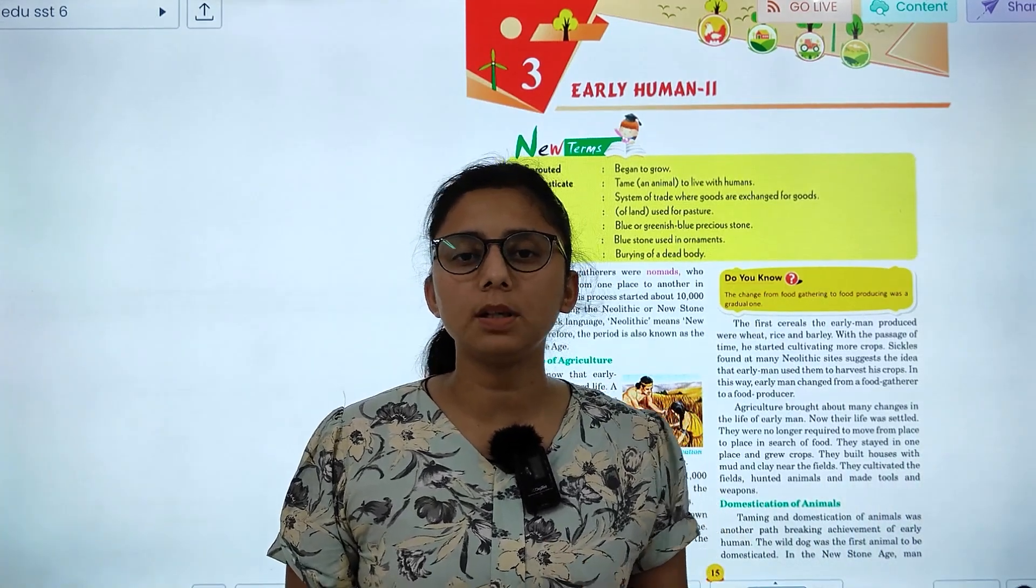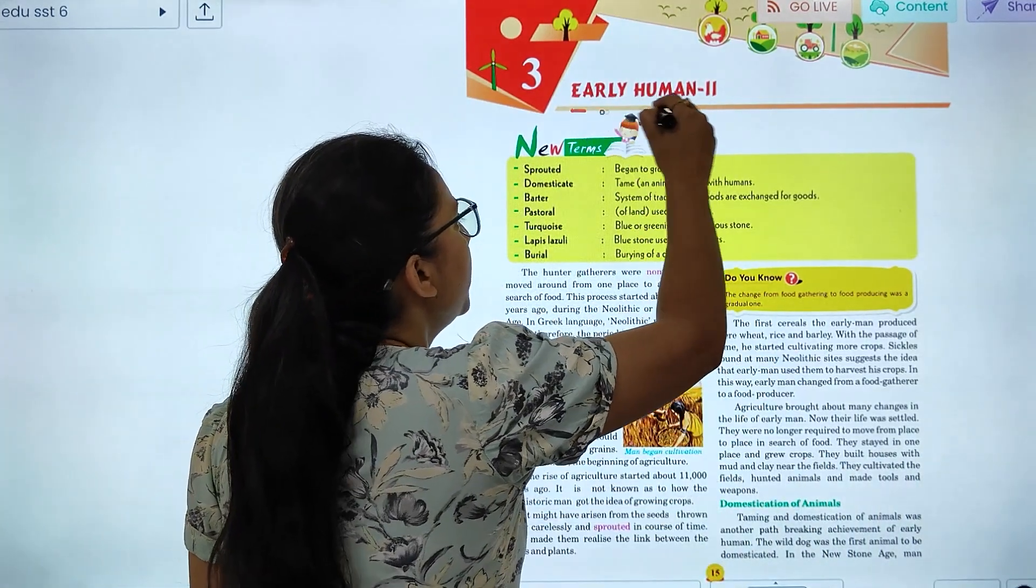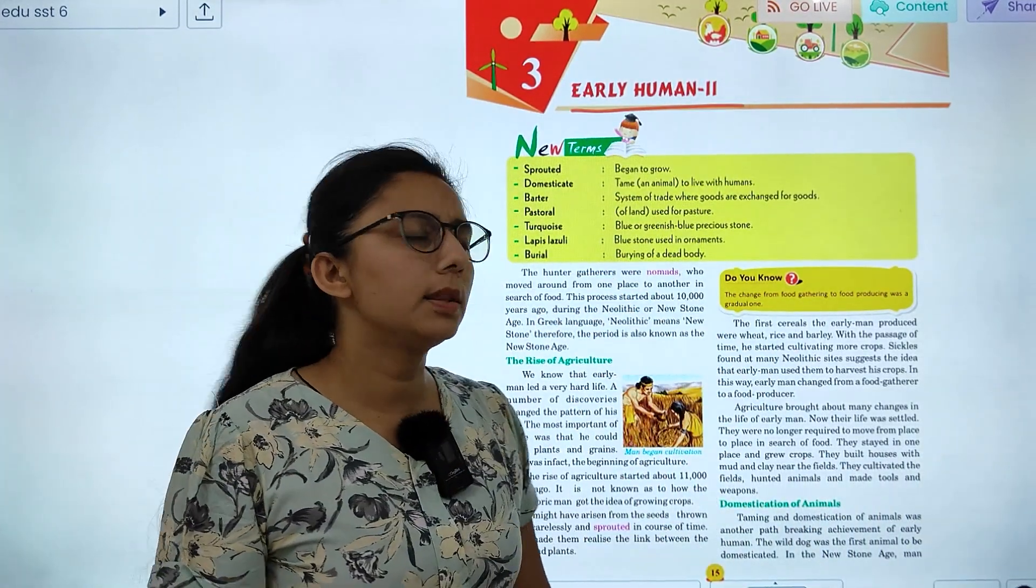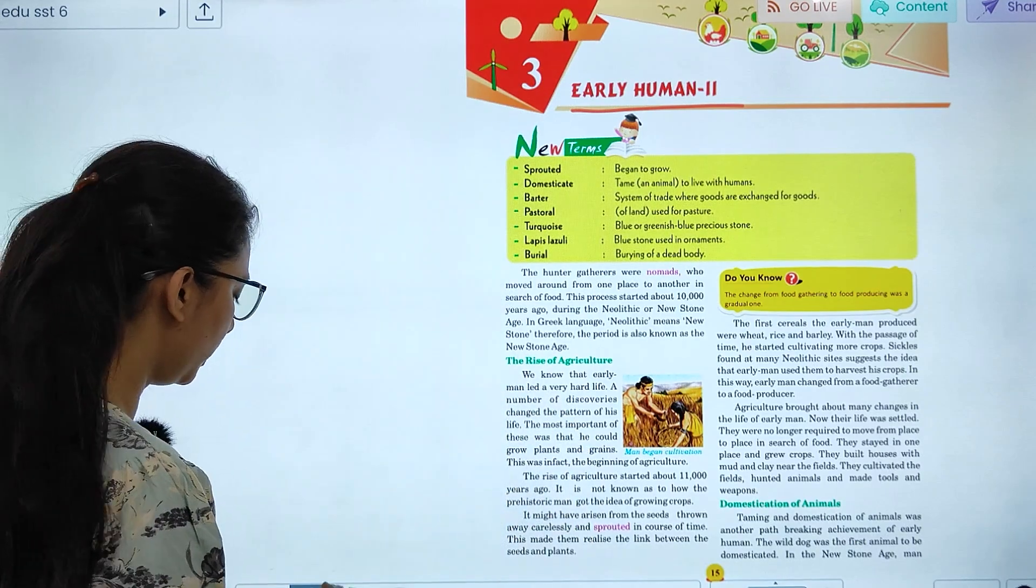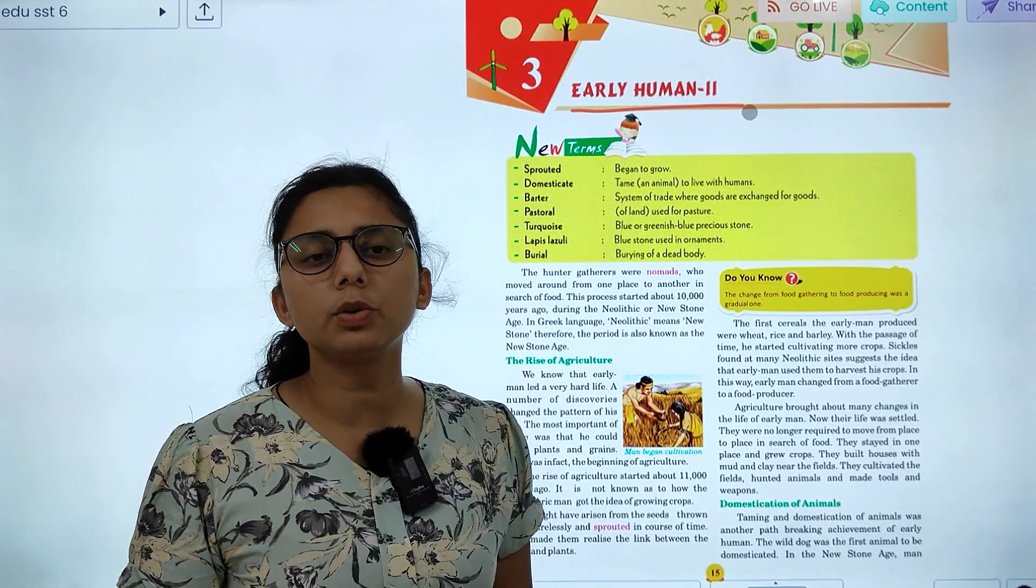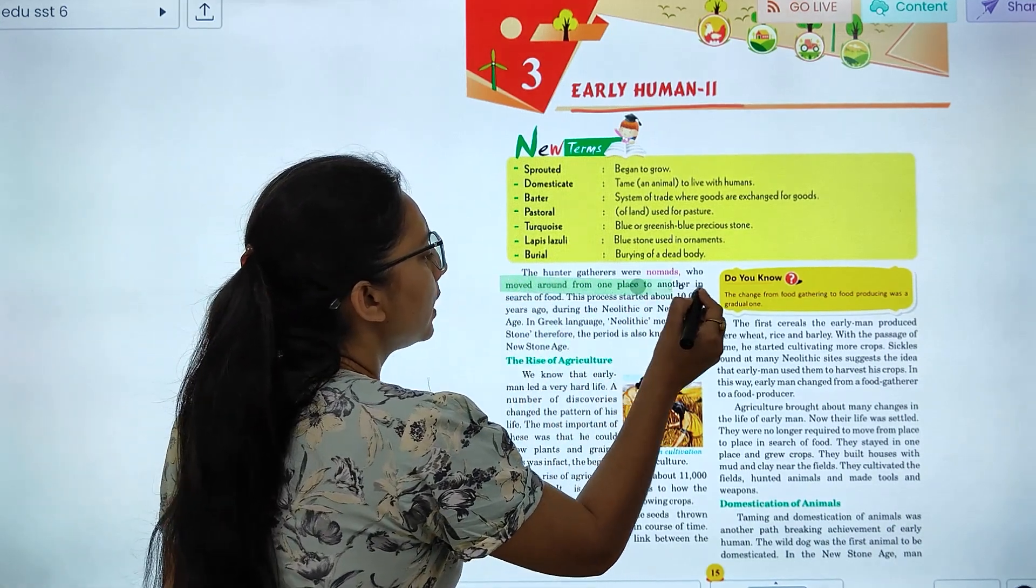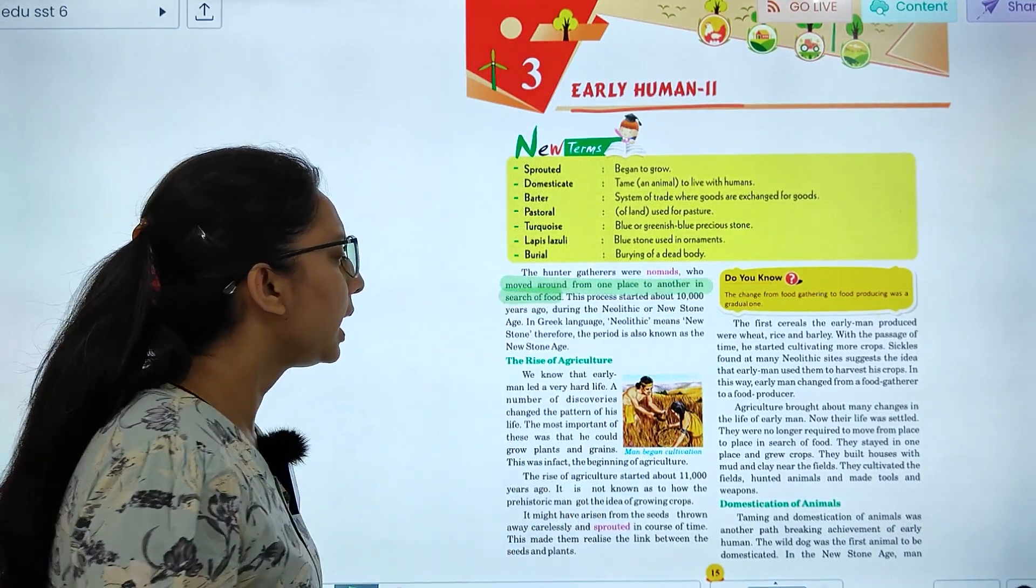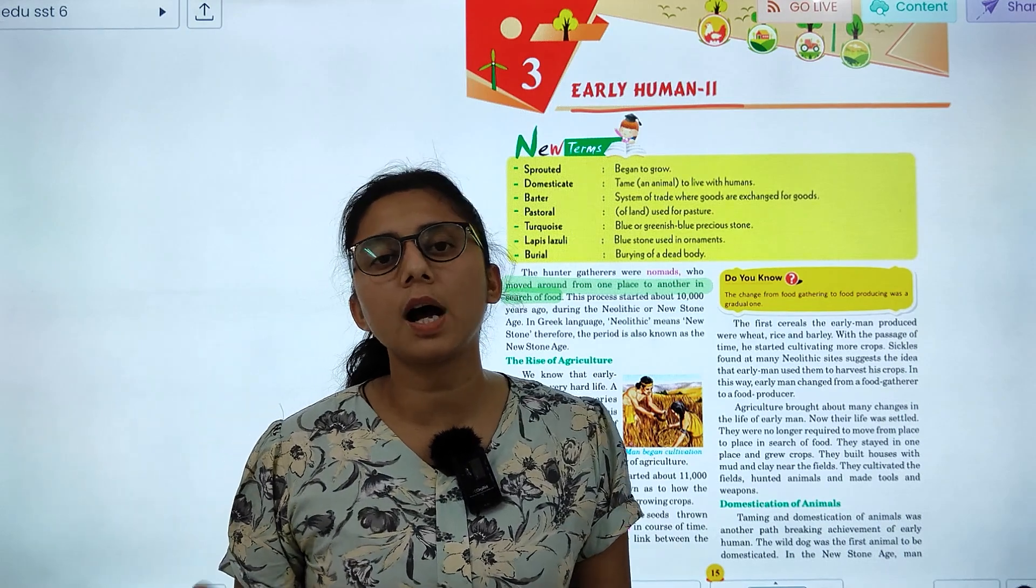Now today let's start with chapter number 3, Early Human Settlements. In this chapter, we will study about Early Human Settlements. This is the first part we have read. There were hunter-gatherers who were nomads who moved around from one place to another in search of food. They went from one place to another to eat food.